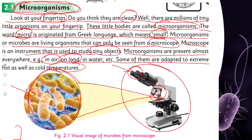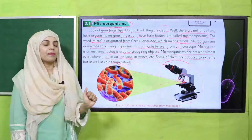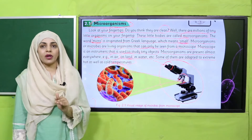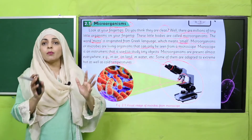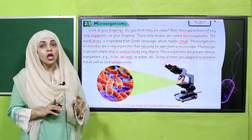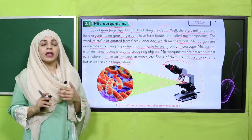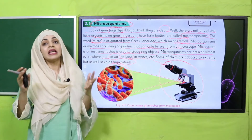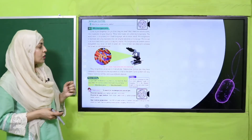A microscope is an instrument used to observe extremely small organisms. Microorganisms are present everywhere — in air, in water, even on your hands and clothes. They can survive at extreme hot and cold temperatures. For example, when we boil water, not all microorganisms are killed — some are heat resistant and can survive at extreme hot or extreme cold temperatures.